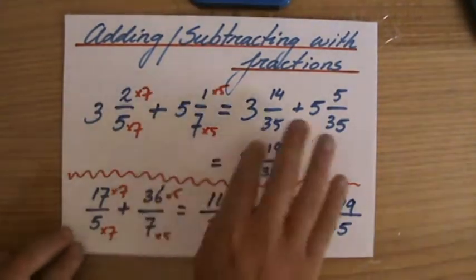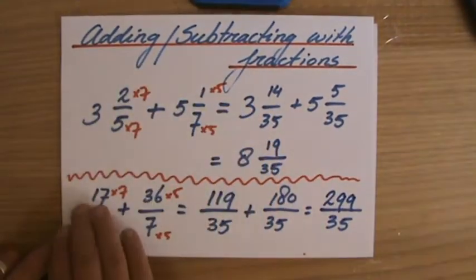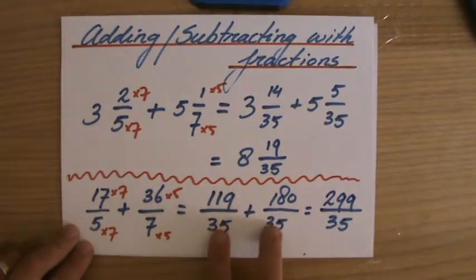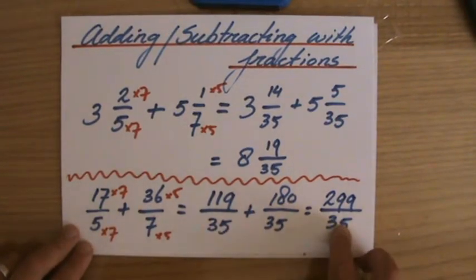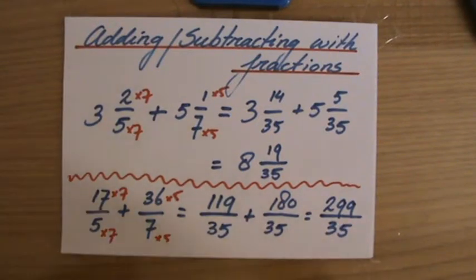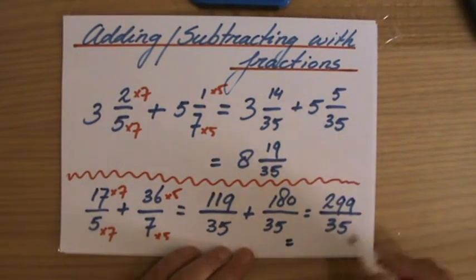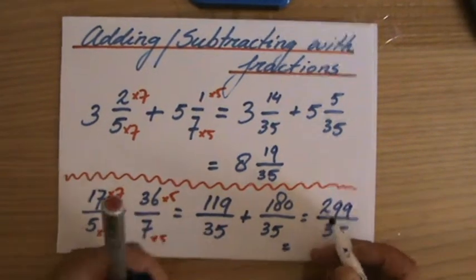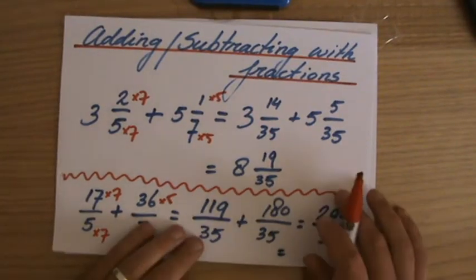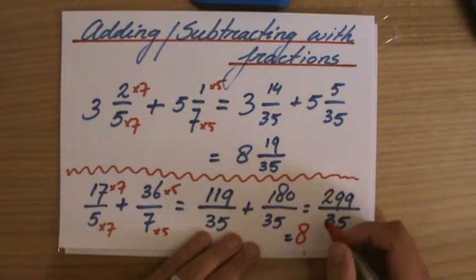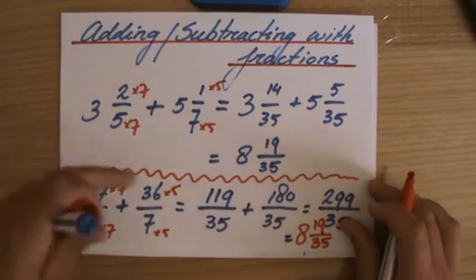So again, the mixed number, I have manipulated it, I've changed it into a top-heavy fraction, then I find the equivalent fractions so those denominators are the same, and then I have my answer, which is a top-heavy fraction, which I have to now convert into a mixed number. How many times is thirty-five into two hundred and ninety-nine? Well that is eight. I'll do it in red here, it just gets a little bit crowded there. So it is eight, and then my remainder is nineteen over thirty-five.